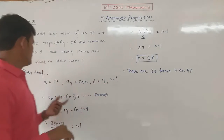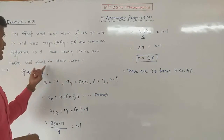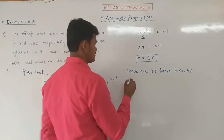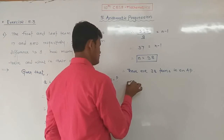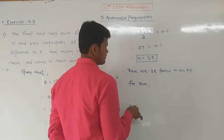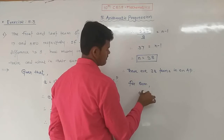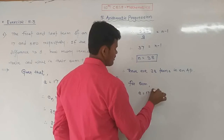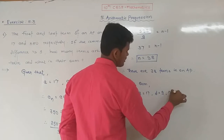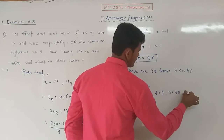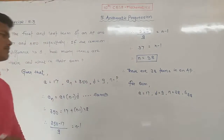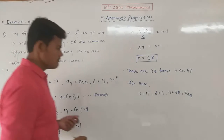Now what is their sum? We have 38 terms in that AP. The value of A is 17, D is 9, and N is 38. We have to find the sum of the first 38 terms.